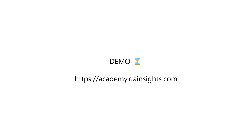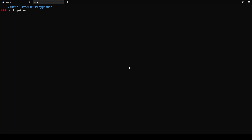Let us install LitmusChaos, install the EC2 terminate by ID experiment, mount the secret, and see how we can prove our hypothesis. Now let us look at my AWS EKS. If you use 'get namespace', of course there is no litmus namespace here because we are yet to create the LitmusChaos.